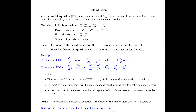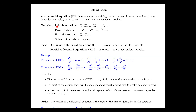Next we have some common notation. We'll start with Leibniz notation, where dx/dt means the derivative of the dependent variable x with respect to the independent variable t. We also have second derivatives and third derivatives and so on.